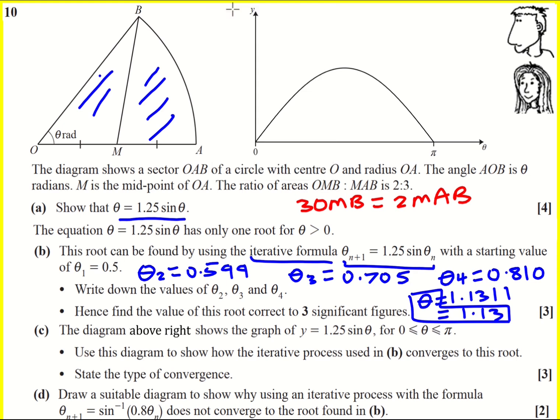The question is now asking us how the method works. Essentially we've got y equals 1.25 sin theta. What is happening when we use this iterative formula? What is happening is that we have the line y equals x, or y equals theta in this case. That's what we're plotting. So y equals theta and y equals 1.25 sin theta, and we want to find the point where they intersect.